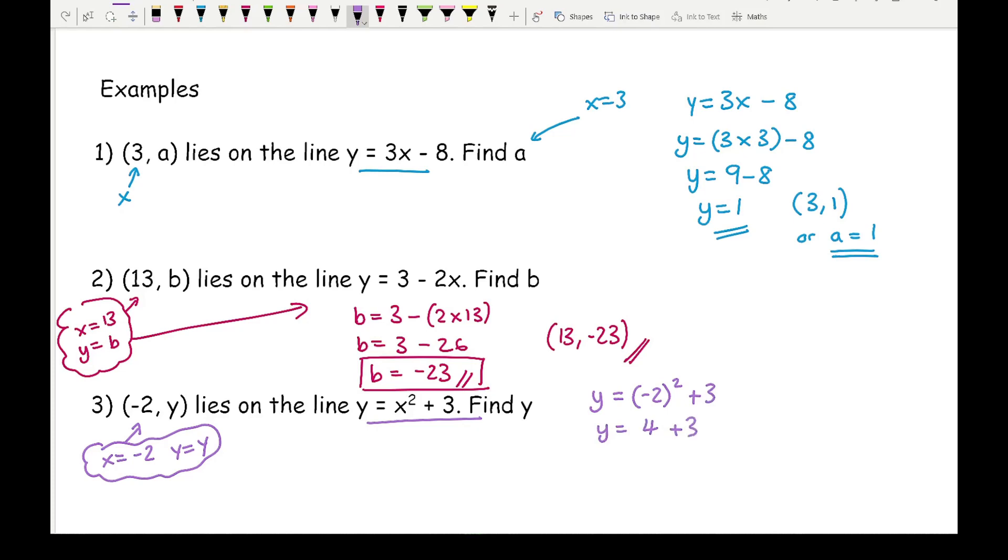Here I've got y equals minus 2 squared is positive 4 plus 3, so y equals 7. If I wanted to write it as a coordinate, it would be (-2, 7).